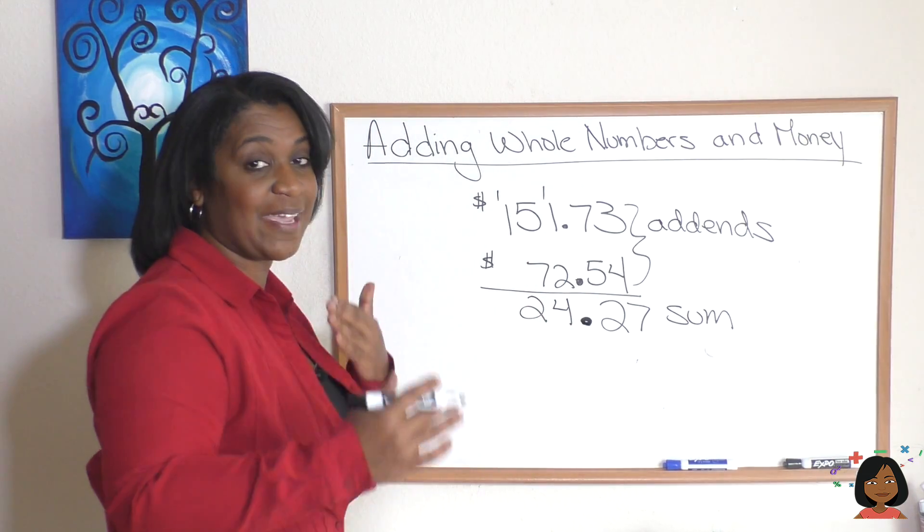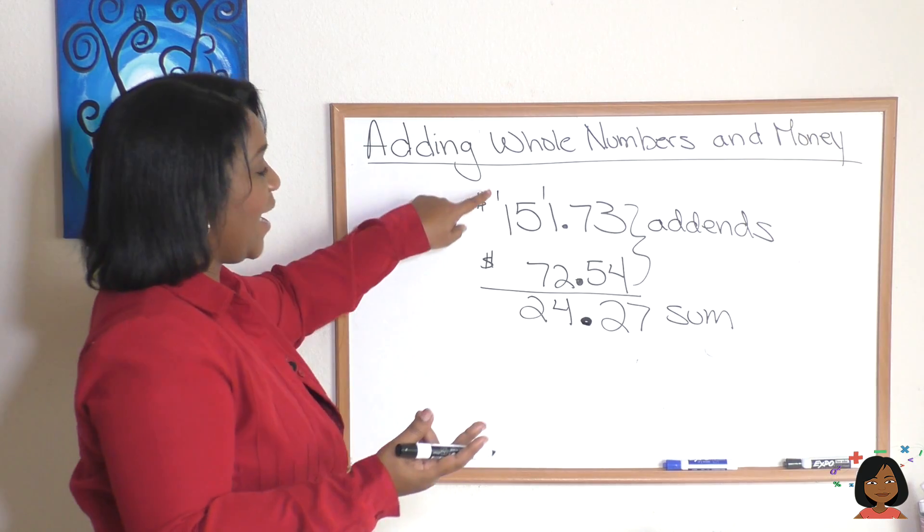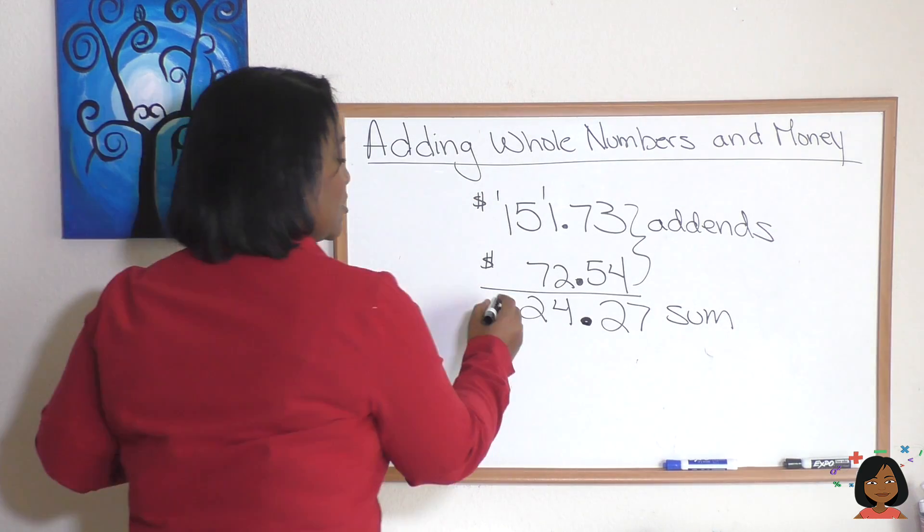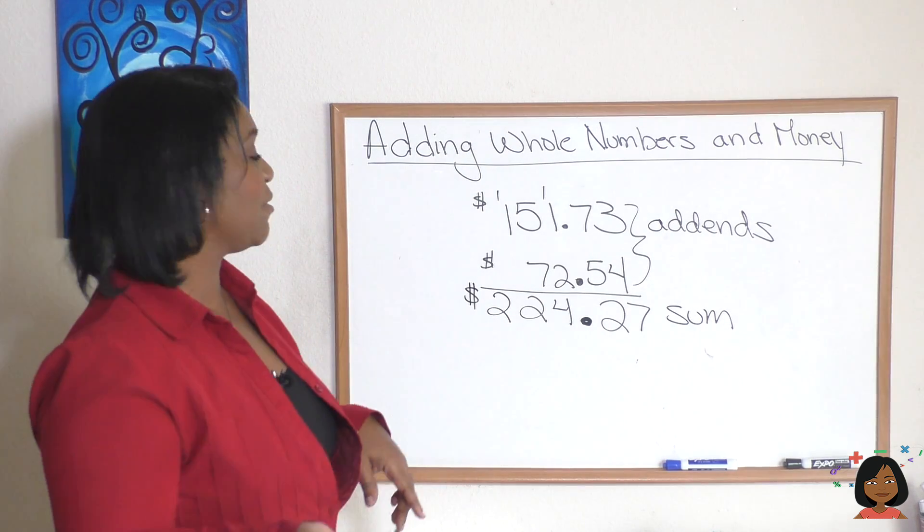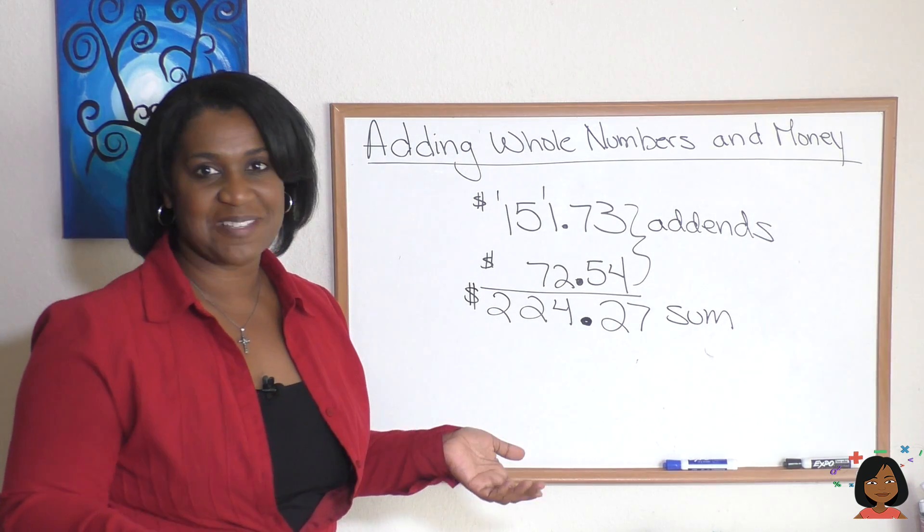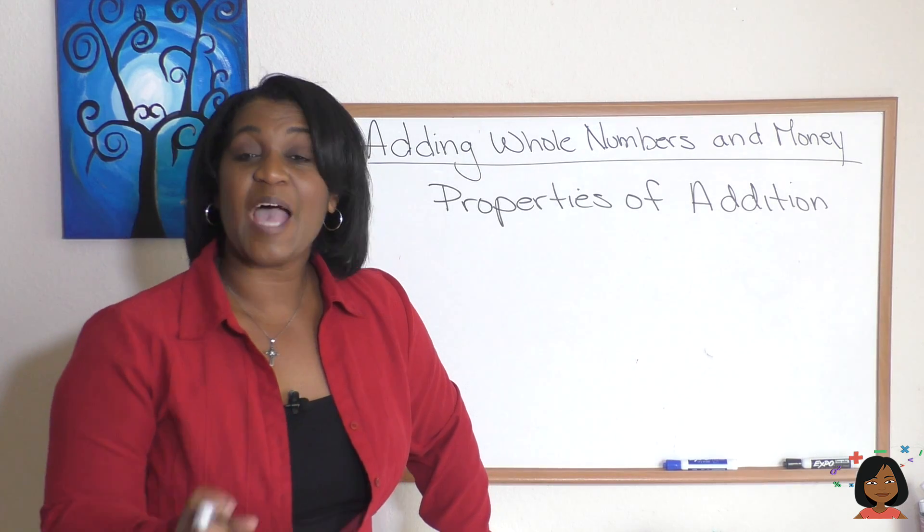And you see that I've been carrying the one anytime I get over a number with ten, and lastly my one plus one is two. Add my dollar sign onto the front, we have two hundred and twenty four dollars and twenty seven cents.